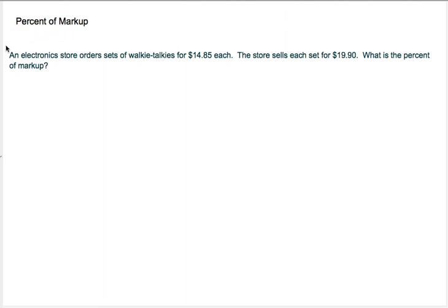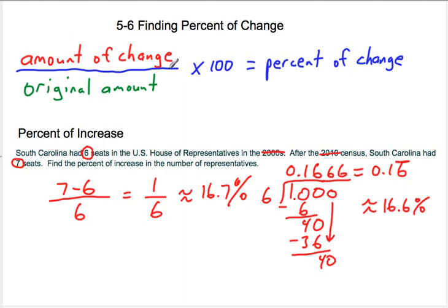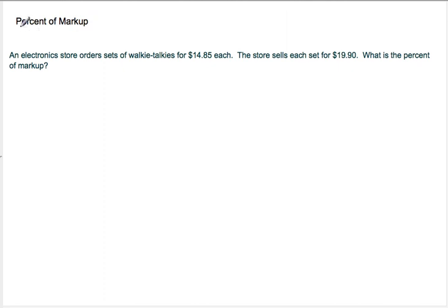So now we're going to use the same formula. Remember, so for all these questions, we're going to use this same formula, this percent of change formula. But it's going to be called different things. This one was percent of increase. The next one, percent of markup. So when you work at a store, if you're the manager of a store, you obviously make money by selling things for a higher price than you bought them for. So in this case, we are the manager of an electronics store. We're ordering walkie-talkies for $14.85 each. We're then going to sell them for $19.90 each. What is the percent markup?